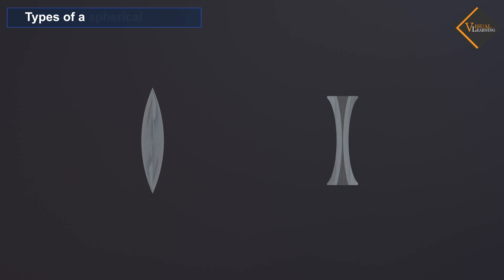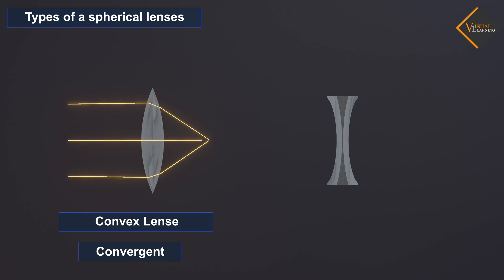Spherical lenses are of two major kinds called convex or convergent lenses, and concave or divergent lenses. Let's understand them in detail.